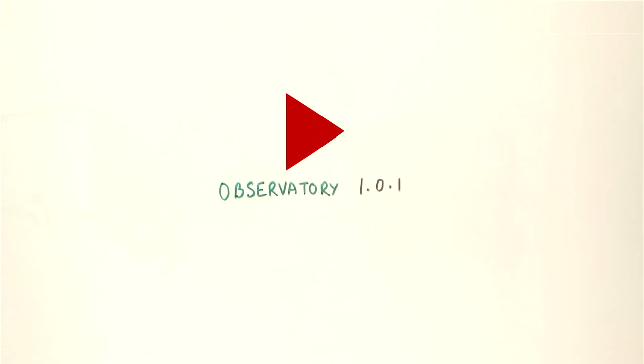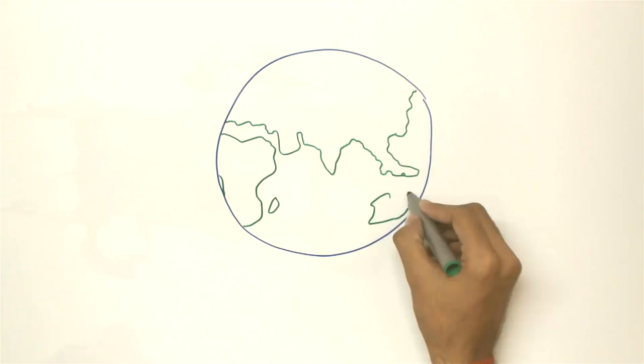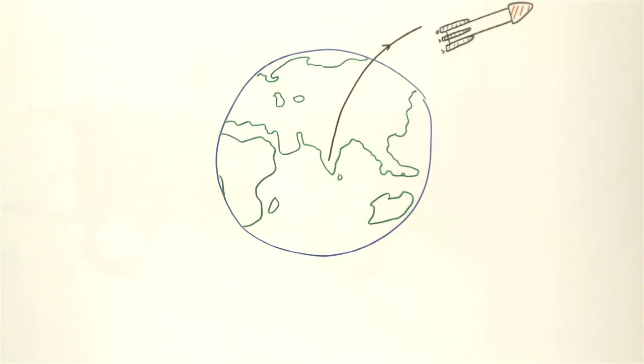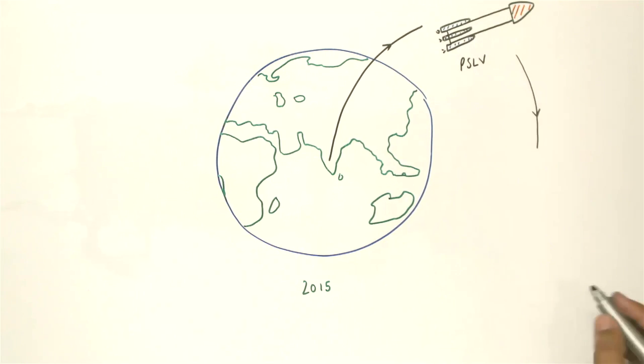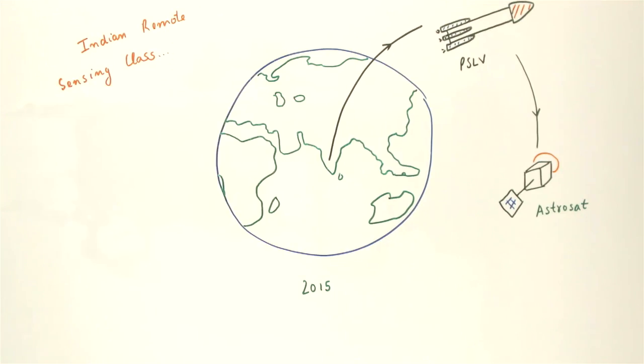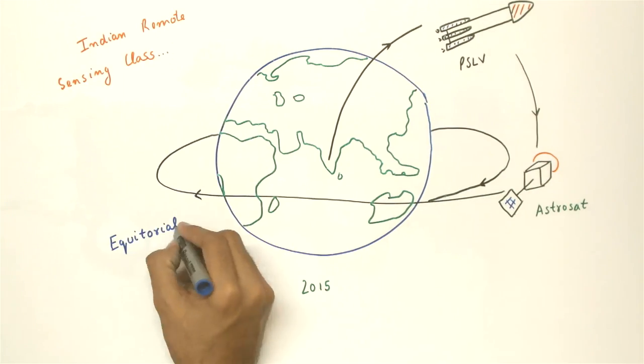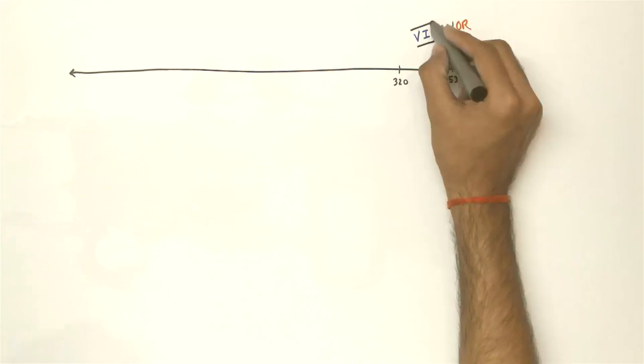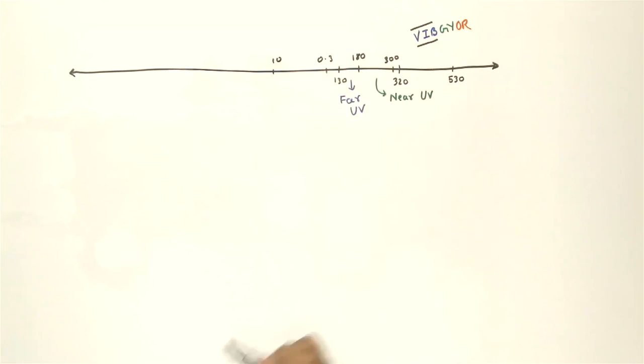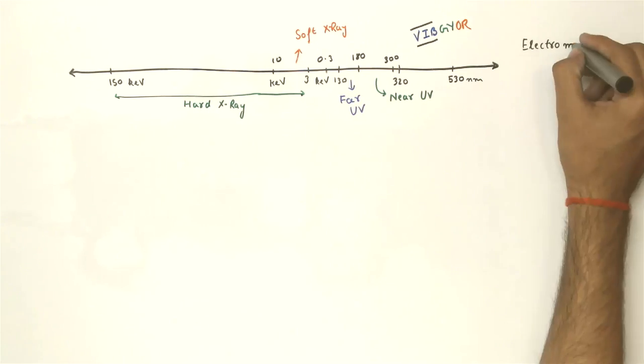ISRO's Observatory 101. India's first dedicated astronomy satellite, AstroSat, is scheduled to launch on board a PSLV rocket in 2015. AstroSat is proposed as a multi-wavelength astronomy mission on an IRS-class satellite into a near-Earth equator orbit by the launch vehicle. The payloads on board cover the visible near UV, far UV, soft X-ray and hard X-ray regions of the electromagnetic spectrum.